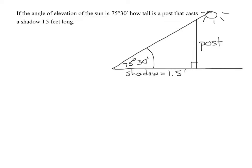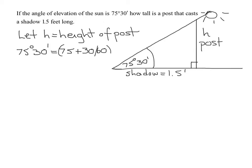Remember we need to find how tall the post is. So I'm going to say let h equal the height of the post. Before I go any further, let's look at the angle of elevation of 75 degrees 30 minutes. It's going to be much easier if I put it in my calculator in decimal form. So it's going to be 75 plus 30 divided by 60, since there are 60 minutes in a degree. That is 75.5 degrees, since 30 minutes is half a degree.